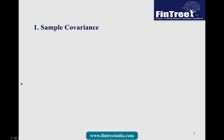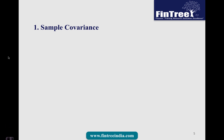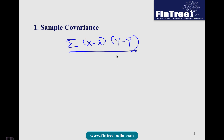The first formula we would look at is sample covariance. The sample covariance formula we had also seen at CFA Level 1. The formula is the summation of (x minus x-bar)(y minus y-bar) divided by n minus 1, since the formula is for sample. So it's a fairly straightforward formula.